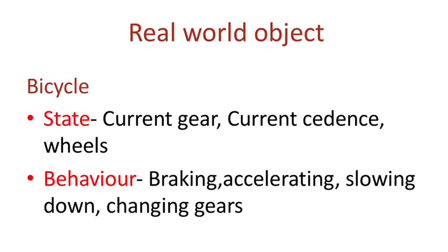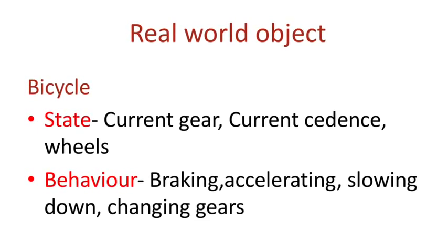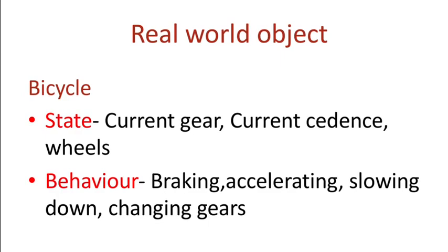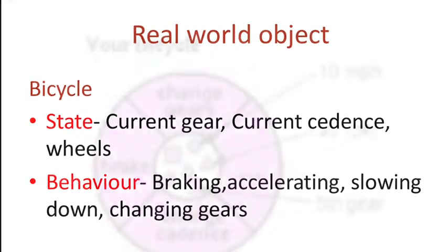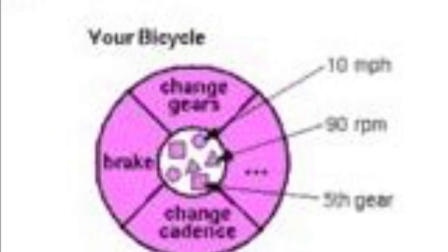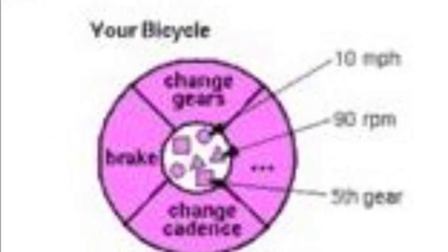If we consider an example of a bicycle, it is having state like its current gear, current cadence and number of wheels. And its behaviors are changing gears, braking, changing cadence, etc.